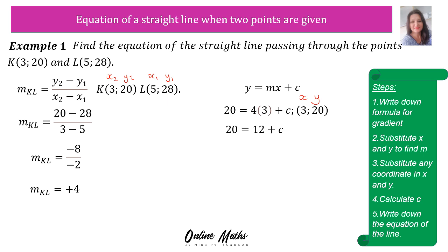And now I'm going to solve for c. 4 times 3 is 12. Now let the 12 go across. It becomes negative 12. 20 minus 12 is 8 is equal to c. Therefore c's value is 8 and the equation is y equals 4x plus 8.